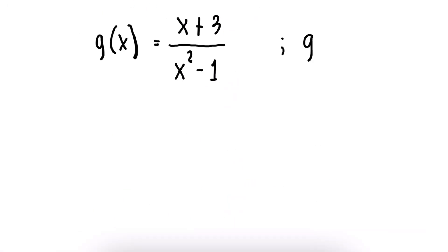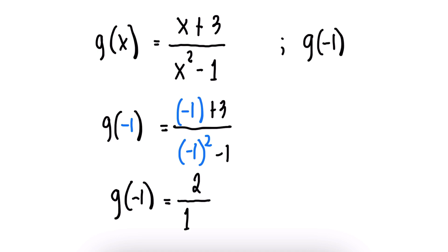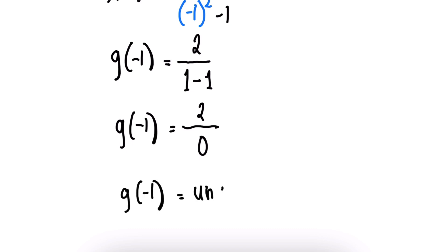Now evaluate g(−1) using the same function. g(−1) = (−1 + 3)/((−1)² − 1). (−1)² = 1, so g(−1) = 2/(1 − 1) = 2/0. When any number is divided by 0, the result is undefined. Since the denominator cannot be 0, g is not defined for x = −1.